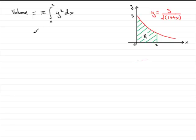So all we need to do now is substitute for y. So we've got pi times the integral of y squared. Now if y is 3 over the root of 1 plus 4x and we square this, we're going to get 9 on the top and 1 plus 4x on the bottom. So put that in, 9 over 1 plus 4x and don't forget the dx, and the limits 0 to 2.